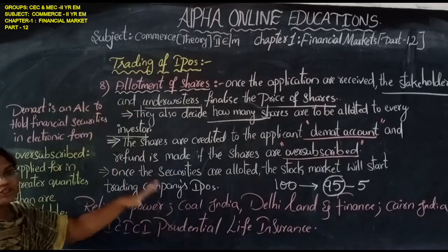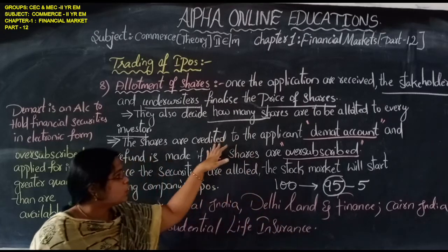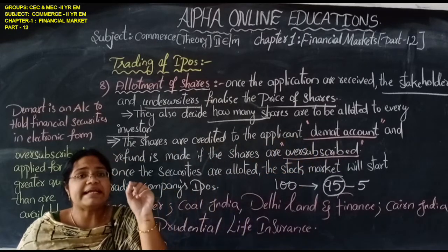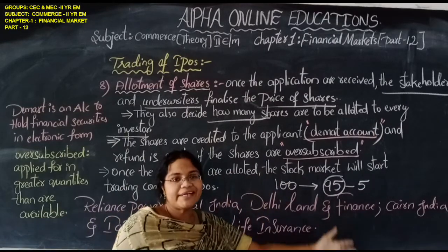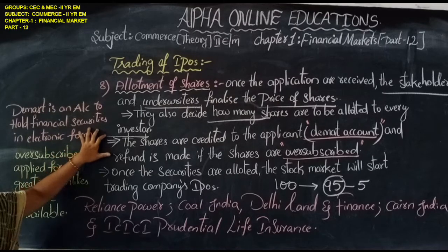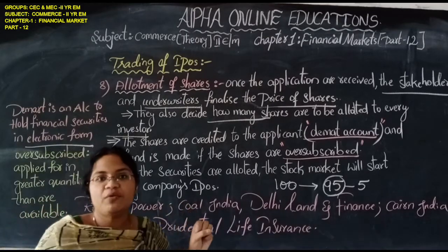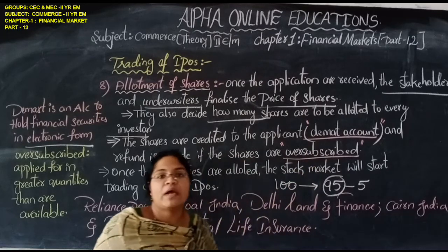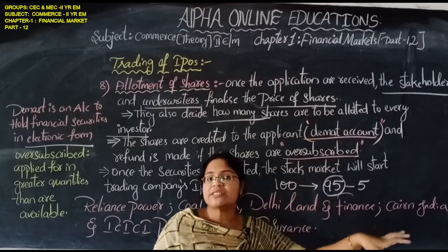The shares are credited to the applicants who applied — whether online or offline — into their demat accounts. A demat account is an account used to hold financial securities in electronic form. Just as we need a bank account for money transactions, we need a demat account to buy and hold shares in the share market.